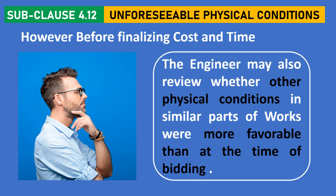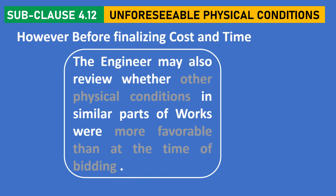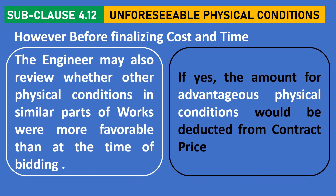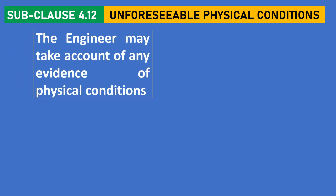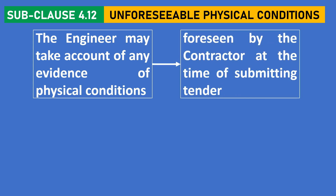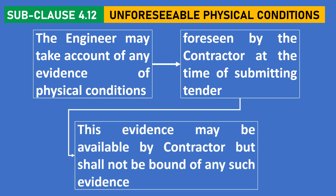Before finalizing, the engineer may also review whether other physical conditions in similar parts of work were more favorable than at the time of bidding. If yes, the amount for advantageous physical conditions would be deducted from the contract price. The engineer may take into account any evidence of physical conditions foreseen by the contractor at the time of submission of tender. This evidence may be provided by the contractor; however, the engineer is not bound to accept such evidence.